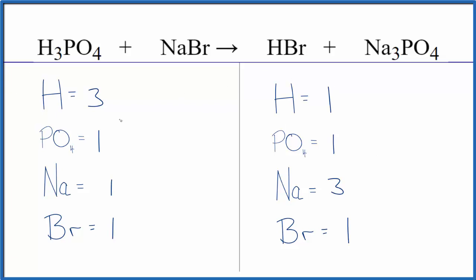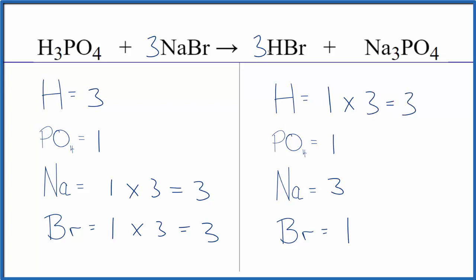I like to leave hydrogens till last, so I'll start with the sodium. If I put a three in front of the sodium bromide — one times three — that'll give me three sodium and three bromine atoms. Now I'll put a three in front of the HBr: one times three gives us three hydrogens, and one bromine times three gives us three bromine atoms. And we're done — this equation is balanced.